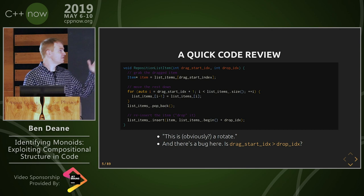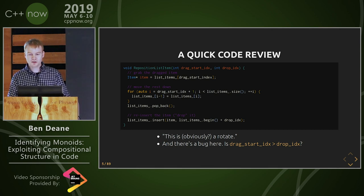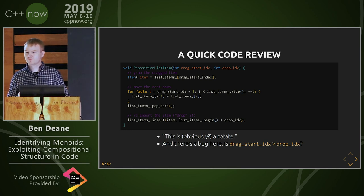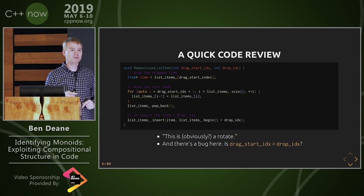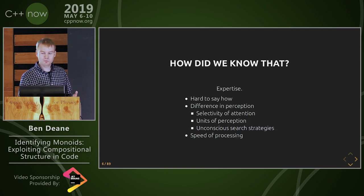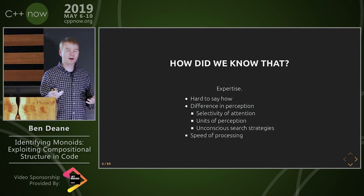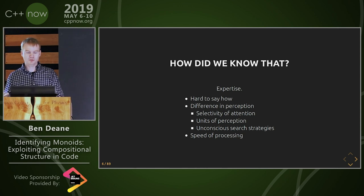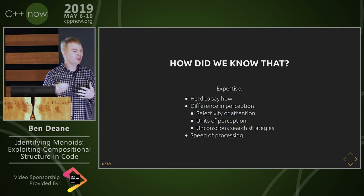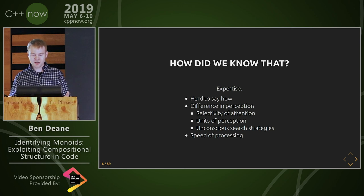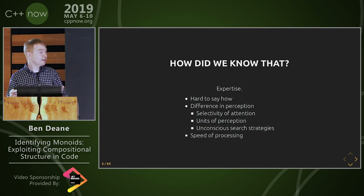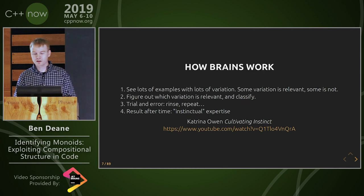Now you're used to spotting these things and you're used to code reviewing. We're all experts. How did you know this was a rotate? That's just what rotate does. We can't really say anything more than that because these are the hallmarks of expertise — you know that you know it, but you don't really know how you know it. You just have a spidey sense when you look at code. A C++ novice looking at that code probably wouldn't even know where to start.